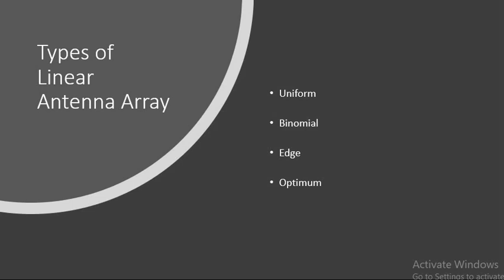Now look into various types of linear antennas. They are uniform, binomial, edge, and optimized antennas. These are the various distributions, we can say non-uniform antennas.